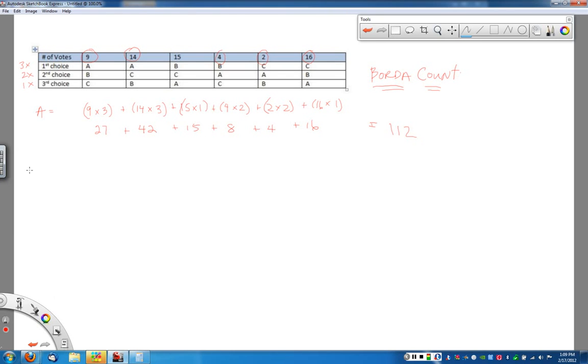All right, now we're going to have to go through and do the same thing for candidates B and C. When I go to do B, B won for those first nine votes, B gets two points for each because they're second place, so 18. In the next column, those 14 votes are third place, so bottom of the barrel only means that those are each worth one point. For the next one, these 15 votes, candidate B is in first place, so those are worth three points each, or a total of 45.